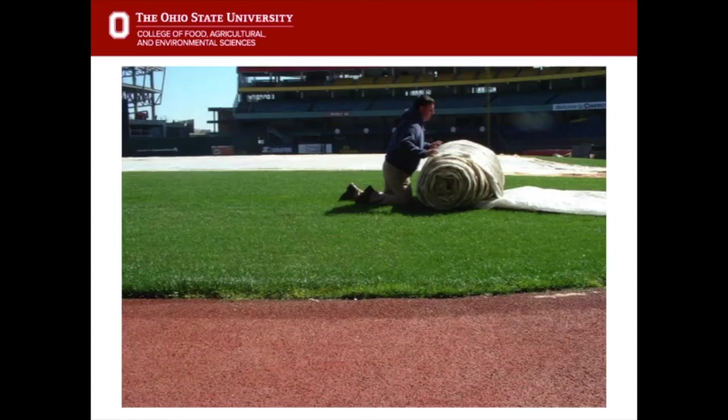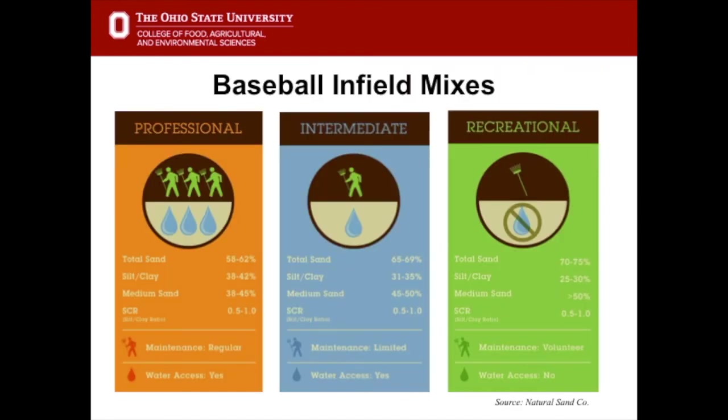Many professionals will have rain covers on baseball fields so that if rain is coming during a game, the ground staff will run onto the field and cover the skinned areas to make sure water doesn't reach the infield, because it won't drain due to the high clay content. Unfortunately, park and rec and high school facilities typically don't have rain tarps or covers because they cost a lot of money.